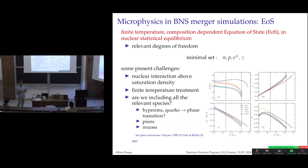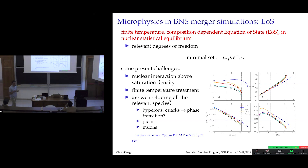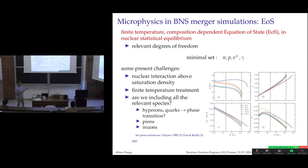There are even more basic questions — is the particle set we include actually complete, or are we missing something? At high density, one can think about hyperons and quarks. At high temperatures, pions start to be produced and should not be neglected. But there are also muons, which are not exotic physics — we know they are there — and I will talk about them as well.